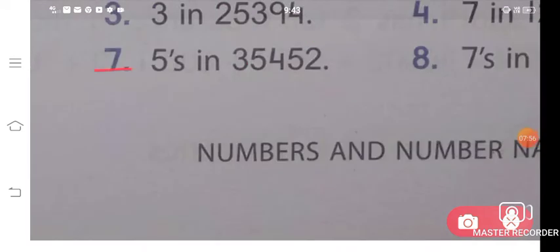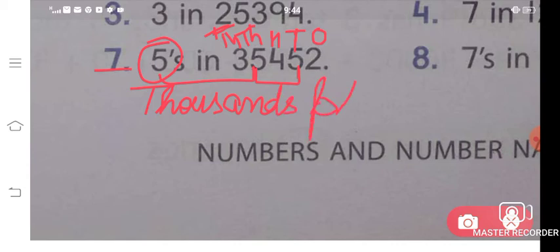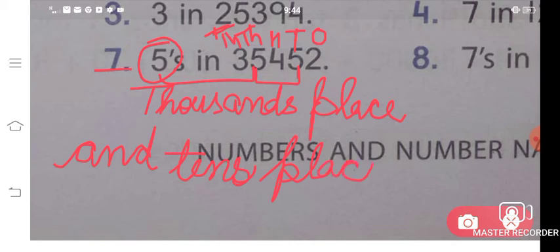Now the seventh question. Again write place values: ones, tens, hundreds, thousands, and ten-thousands. Here 5 appears in two places. If a digit appears in two places, you write both places. First write thousands place — because 5 is coming at the thousands place — then write 'and' because it appears at one more place as well.